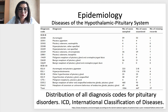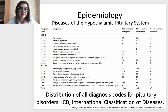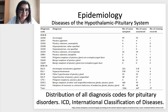This shows the distribution for all diagnosis codes for pituitary disorders according to the International Classification of Disease, listing all main disorders of the hypothalamic-pituitary system and their ICD codes.